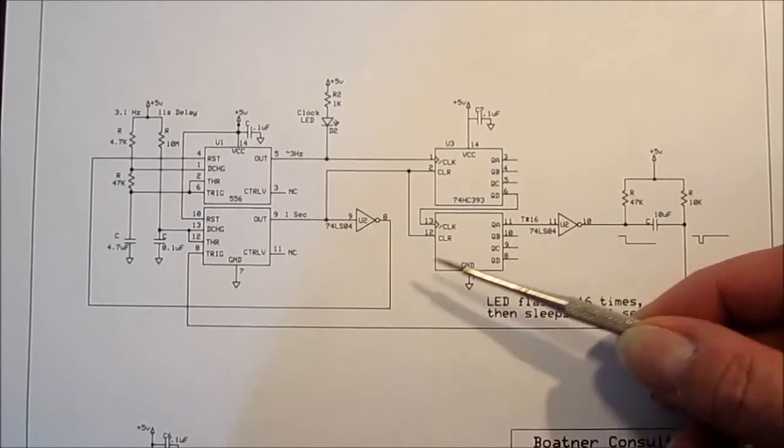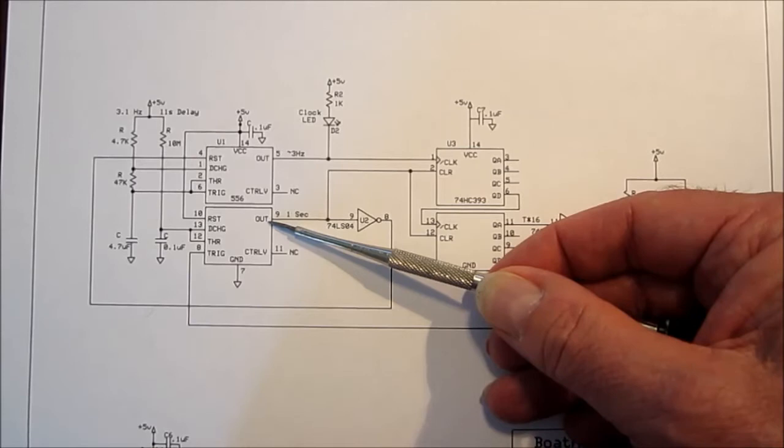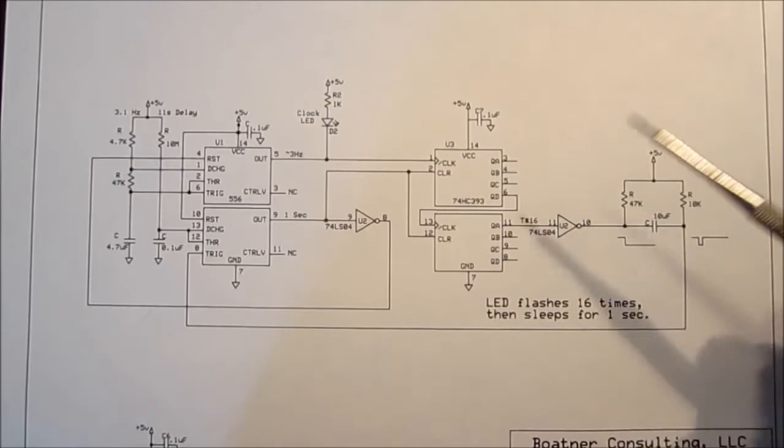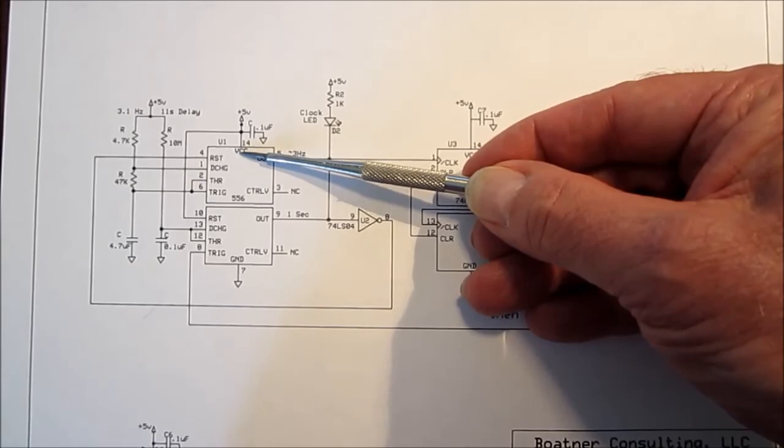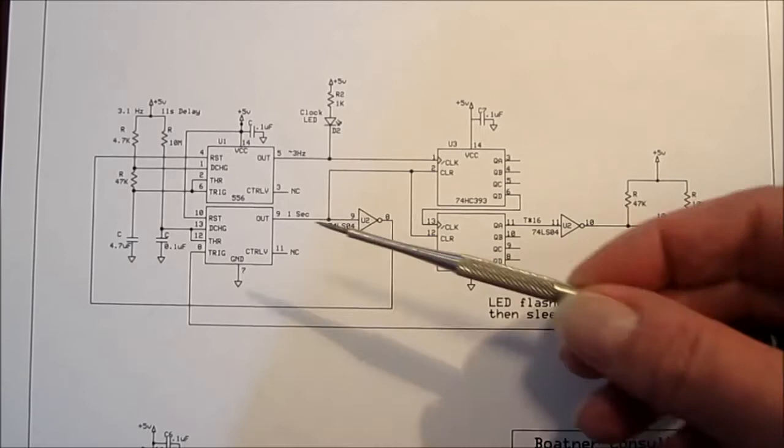Before we get to that, here is the counter. The counter simply takes the clock from the 3.1 Hz and it counts as a binary sequence. When this one shot becomes active here, it does two things. One is it resets this counter back to zero again and it also sends a signal and this is why we need the inverter because I need the inverse of that. We send it back here to the reset of the upper portion of the timer which is the clock part. So it stops the clock and then it resets this counter chip, two parts of the counter chip simultaneously.